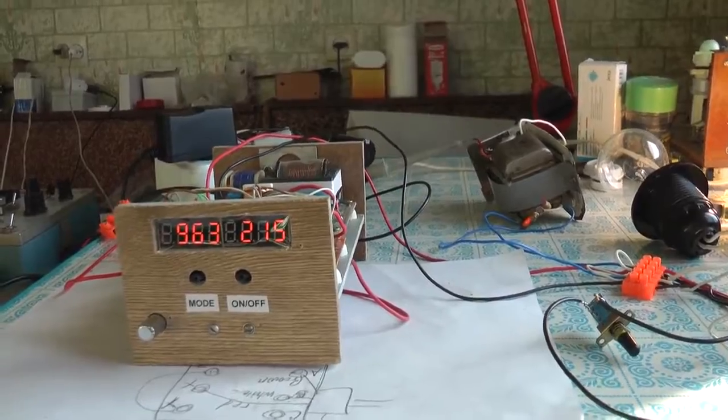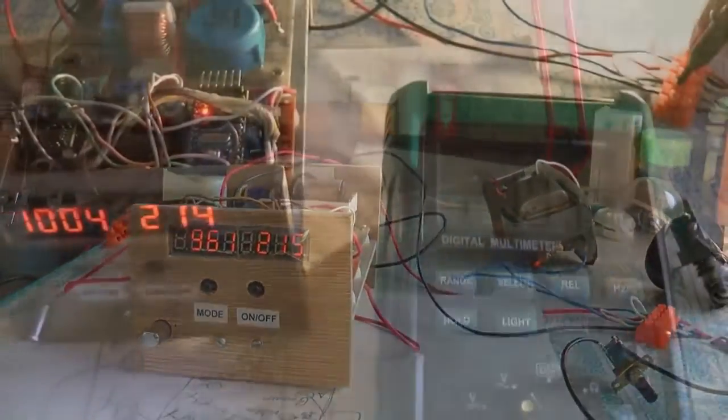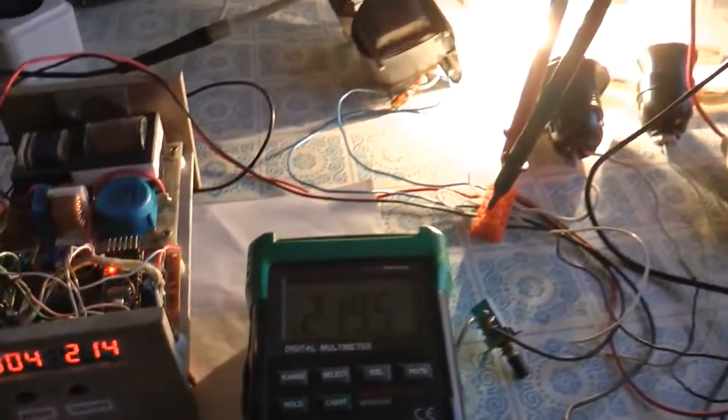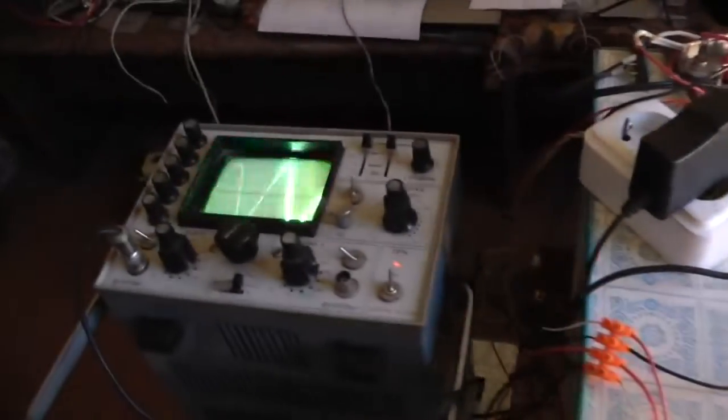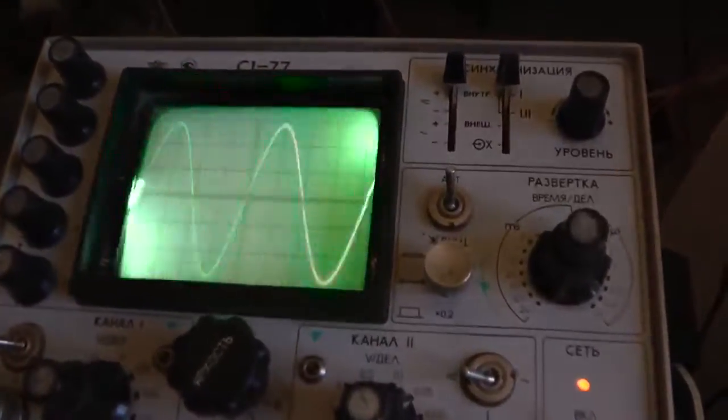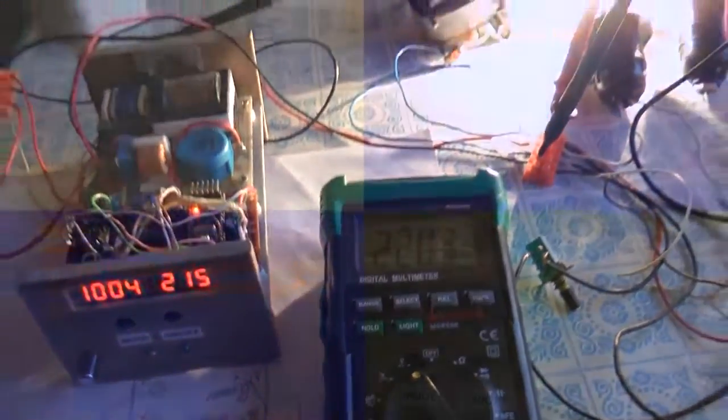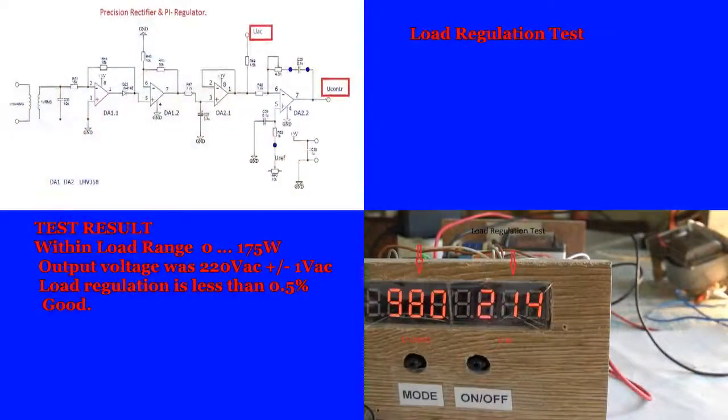As you see, we can say that PI regulator works quite good. Now let's check the display accuracy and waveform. As you see, 215 actually equals to 220.